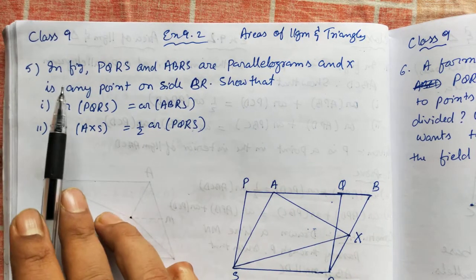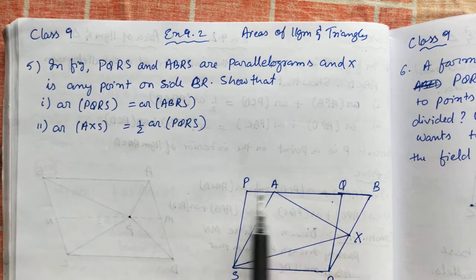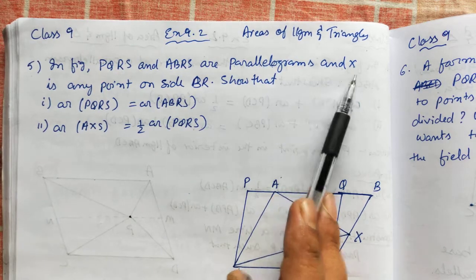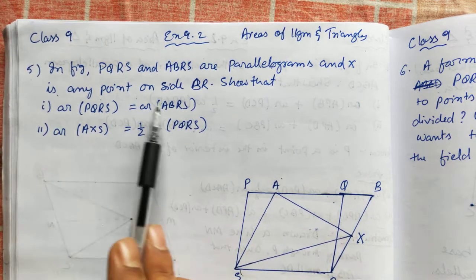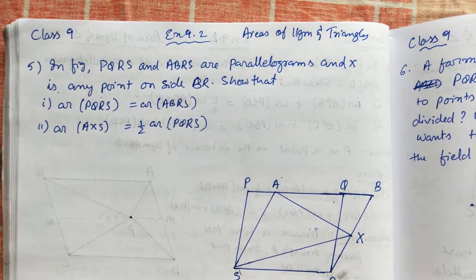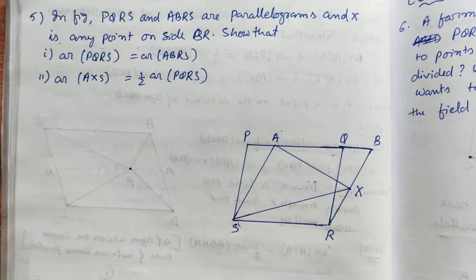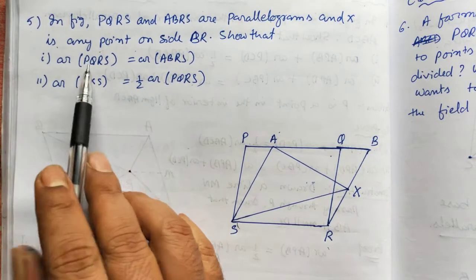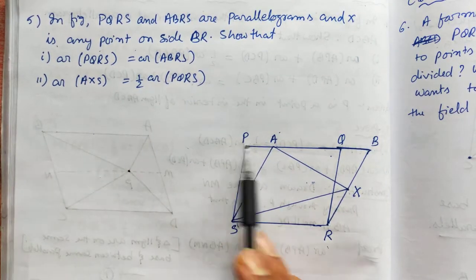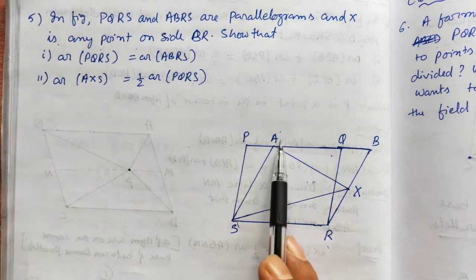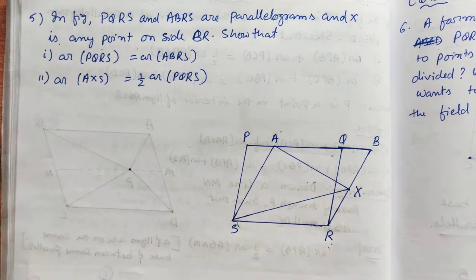Question number 5: In a given figure, BQRS and ABRS are parallelograms, and X is any point on the side BR. You are going to prove that BQRS and ABRS are equal in area.